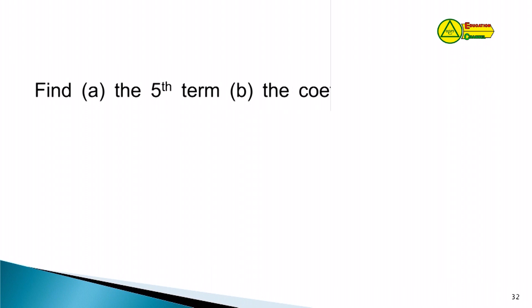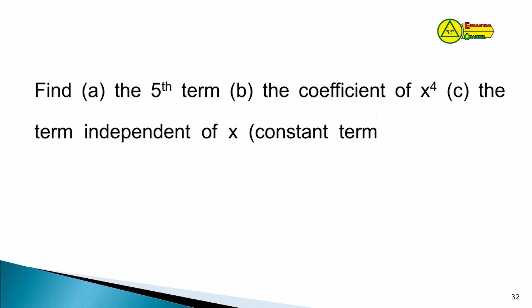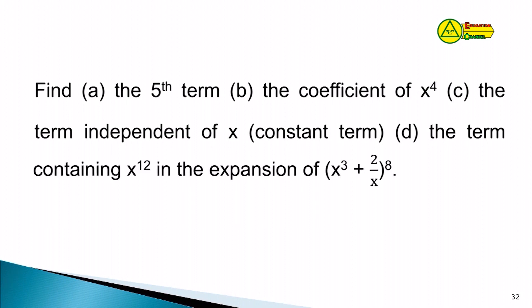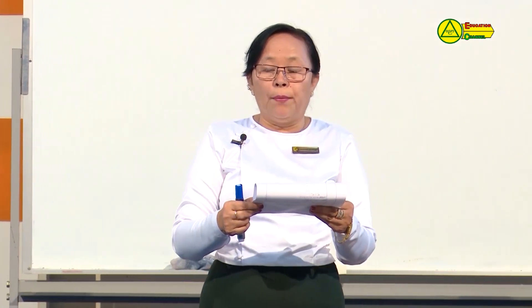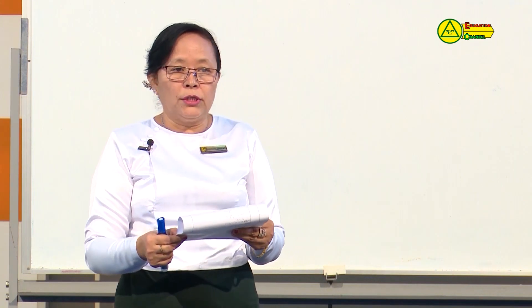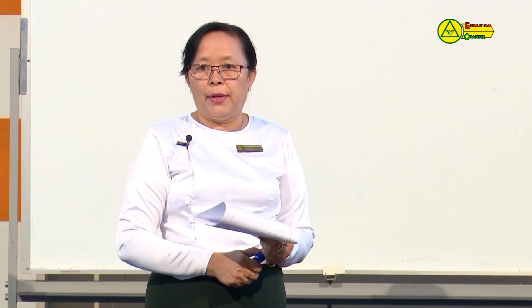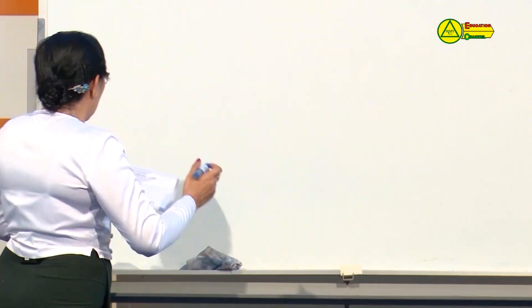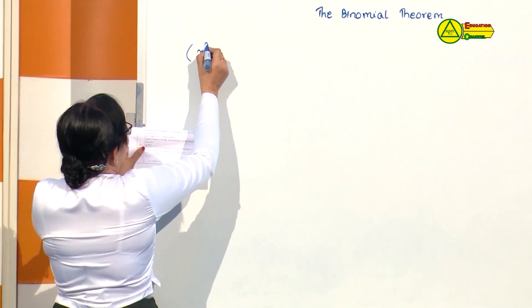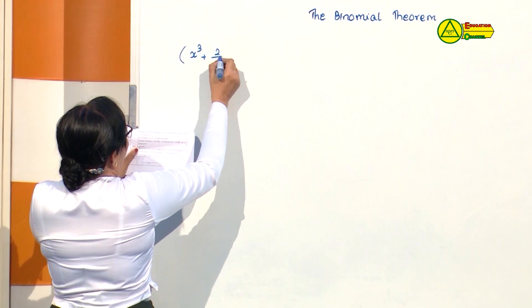Now we have a problem. Find: A, the fifth term; B, the coefficient of x to the power 4; C, the term independent of x; D, the term containing x to the power 4. We are expanding (x squared plus 2 over x) to the power 8. So here we identify the two terms: x squared is the first term, and 2 over x is the second term.